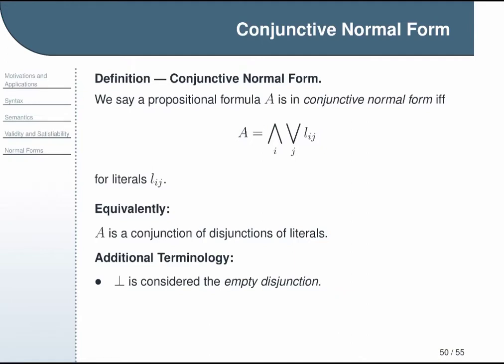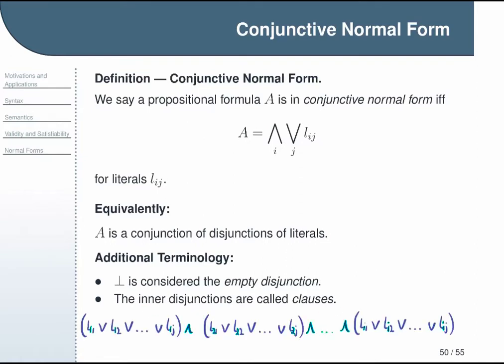Now just to add two more useful terms, the constant formula false, written here as the bottom symbol, is considered the empty disjunction. In this context we think of it as a disjunction that has no literals in it at all. We'll come back to this later to say more about it and why that is the case, but for now just keep in mind that it's something that exists. And then finally, the inner disjunctions in this expression are called clauses. So putting that together, if I say I have an empty clause, that means one of my disjunctions is actually a contradiction.